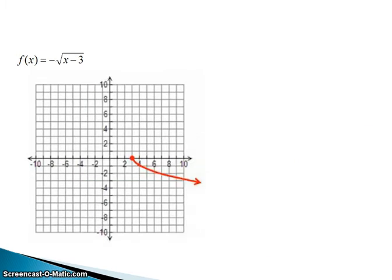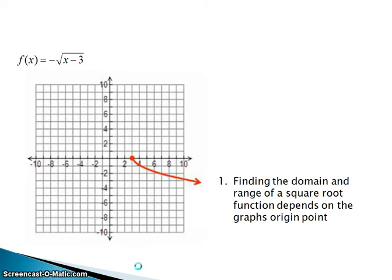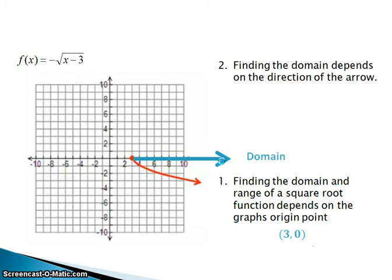We'll do one more example. Here we have a square root function that's been reflected by this negative sign over the x-axis: negative square root of x minus 3. The fact that it's been reflected doesn't change our process at all. We're going to determine the origin point, and this one is (3, 0) — x equals 3, y equals 0. We draw our line to indicate where the domain starts and which direction it's going, and we see it starts at 3 and goes on to infinity. So our domain is [3, ∞).